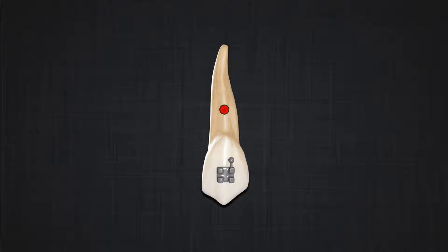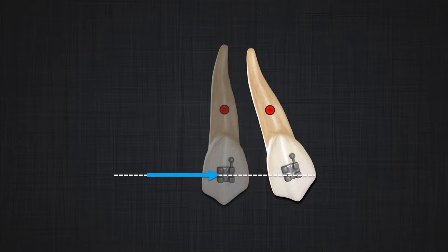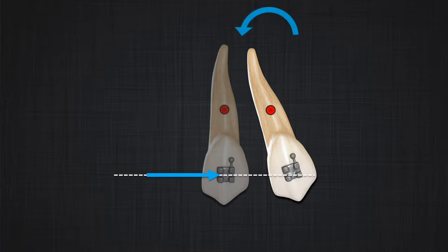But what happens if the force does not pass through the center of resistance? Assume the force passes through the crown. Now there is a distance between the line of action of the force and the center of resistance. In this case, a tendency for rotation or tilting will appear in the system. This tendency for tilting or rotation is called Moment.